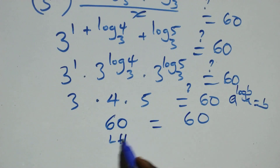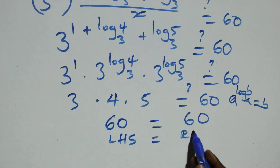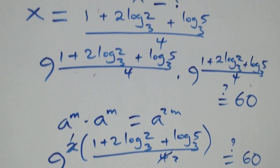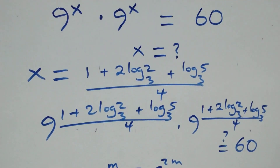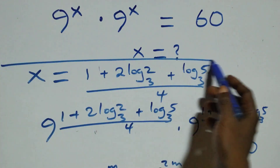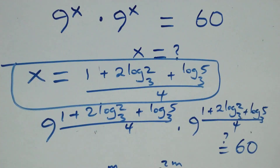Left-hand side equals the right-hand side, and therefore we conclude that x equals 1 plus 2 log base 3 of 2 plus log base 3 of 5, all over 4, satisfies this given problem. Thank you for watching. Don't forget to subscribe for more videos, turn on the notification bell, share this video, give it a thumbs up, and put your comments. See you next time, bye for now.